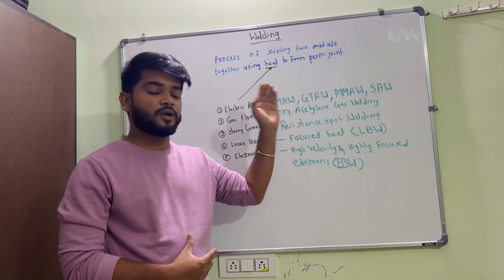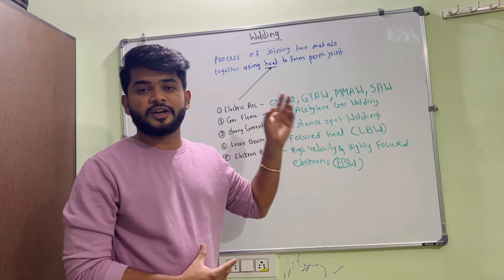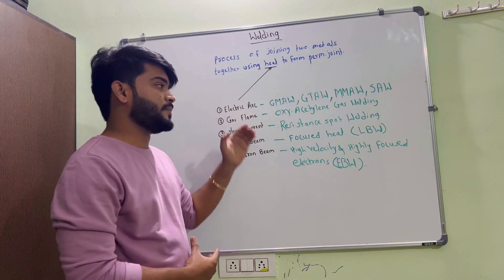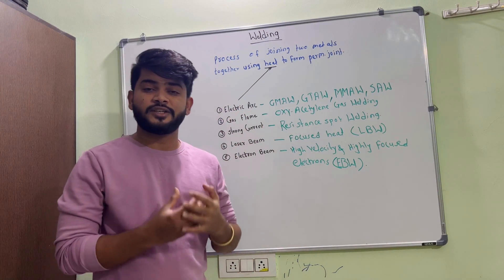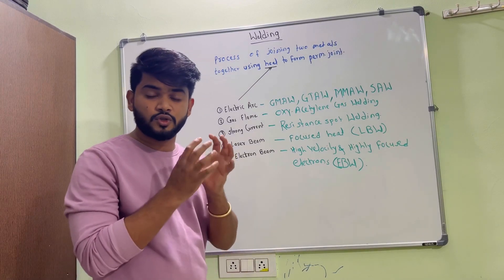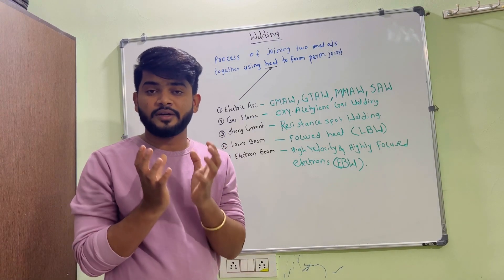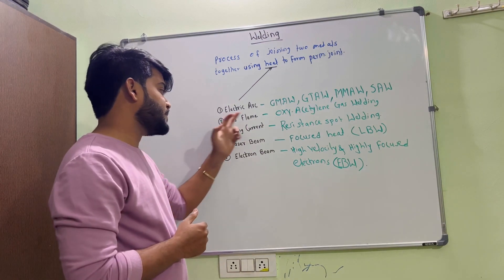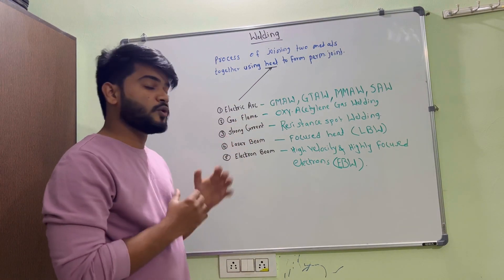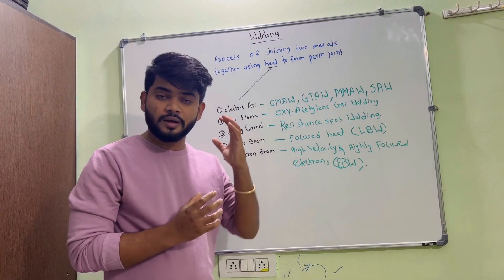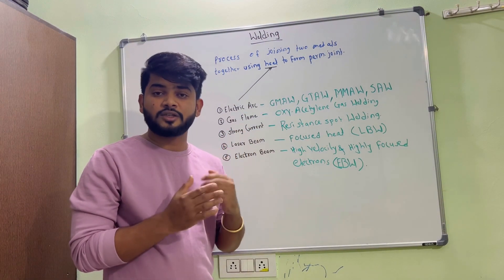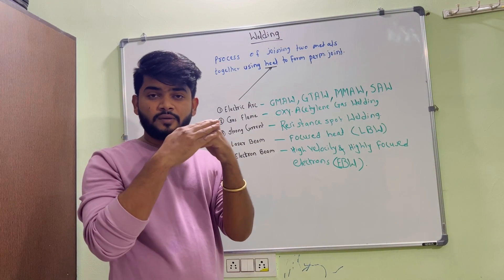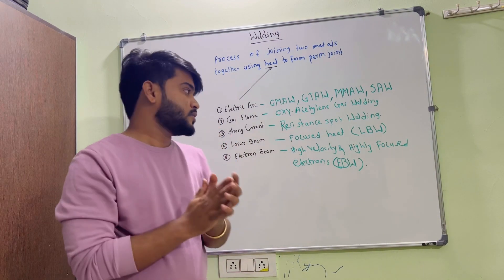In GMAW, GTAW, MMAW, and SAW processes, heat is generated by an electric arc. Another heat source is gas flame — in oxy-acetylene gas welding, a gas flame is used to melt the workpiece and form the weld. Another method is by using strong current, where a strong current is passed through the welding joint which heats the weld joint and forms the weld.